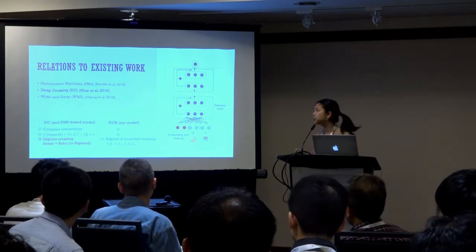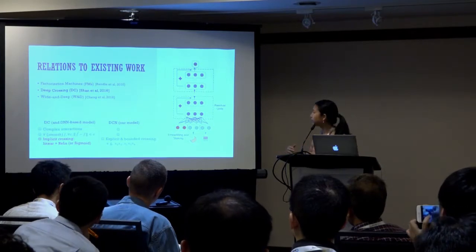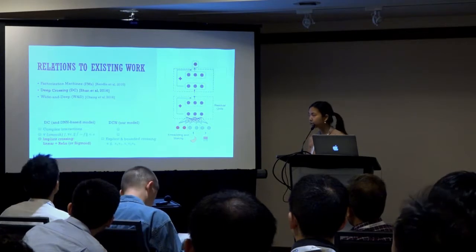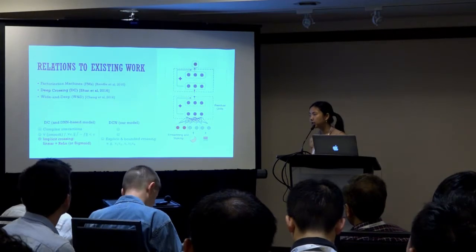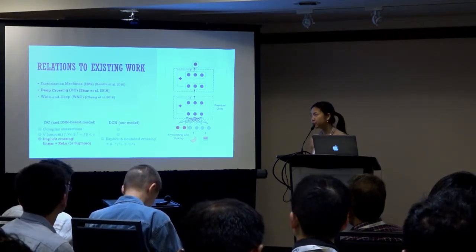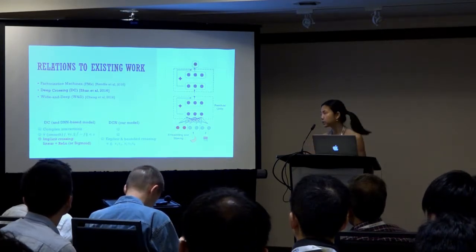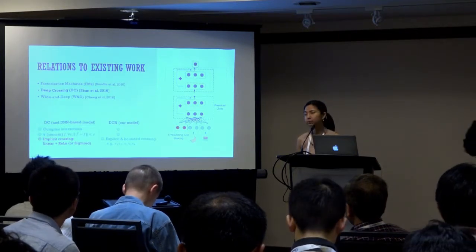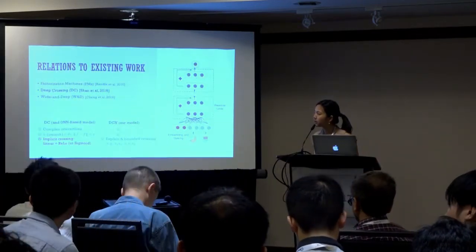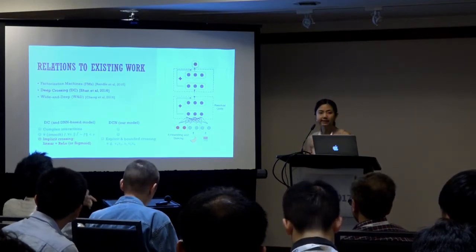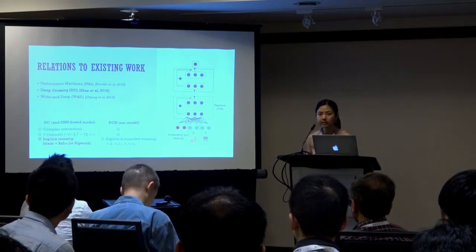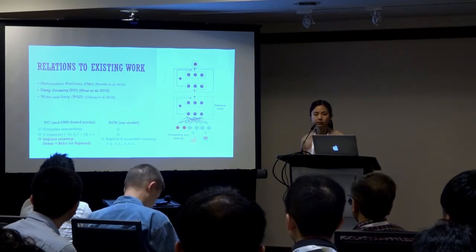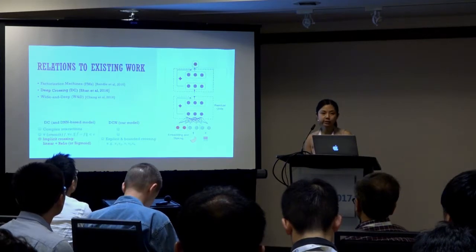Deep Crossing is a residual network-based model. It stacks all types of inputs together and feeds them to multiple residual units. Deep Crossing and other deep network-based models can learn very complex feature interactions. There has been theoretical work showing that a neural network is able to well-approximate any smooth functions given sufficiently many hidden units or hidden layers. Yet one question is: are these models the most efficient representation for functions of practical interest? One thing to note is that the crossings in Deep Crossing are implicit, achieved by linear transformation and activation functions like ReLU or Sigmoid.